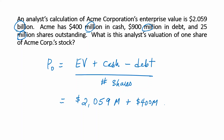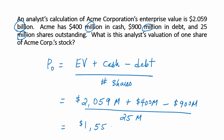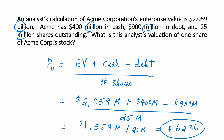That's $400 million in cash, $100 million in debt, divided by 25 million shares, giving us an equity value of $1,559 million, divided by the 25 million shares, giving us a share price of $62.36. So that makes sense. Thank you.